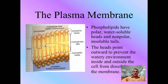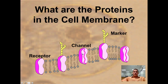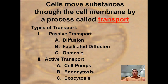The heads point outward to prevent the water environment inside and outside from dissolving the membrane. As for the proteins in the cell membrane, you have receptors, channels — which are the most common — and markers. The markers simply identify what's coming in and what's coming out.